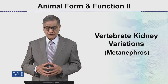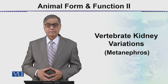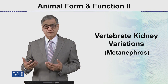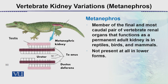In this lecture we will be discussing the vertebrate kidney, that is metanephros, which is the ultimate form of kidney development. It occurs in advanced reptiles, birds and mammals. Metanephros is the member of the final and most caudal pair of vertebrate kidneys. In the beginning there is pronephros, which is anterior, but the metanephros is in the caudal region. This is the kidney that functions as a permanent adult kidney in reptiles, birds and mammals, and is not present in the lower vertebrates.